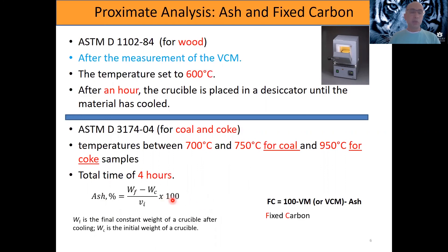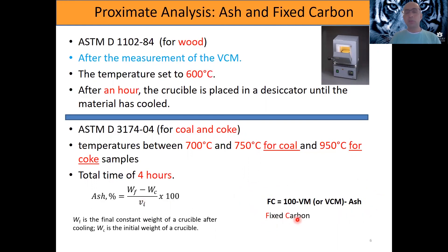You can either use the residue left from the volatile matter measurement and place it in the muffle furnace, or use a fresh dry sample. Once you have the ash content, fixed carbon is calculated by difference using the equation: 100 minus volatile matter minus ash equals fixed carbon. This is also reported on a dry basis.